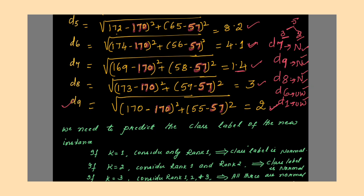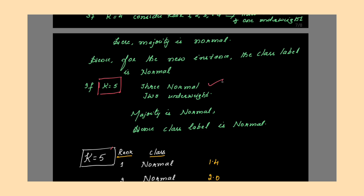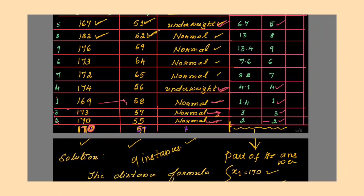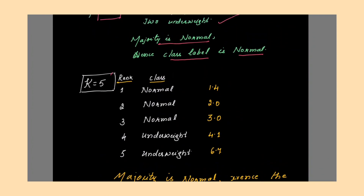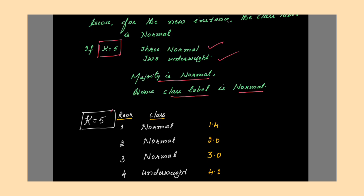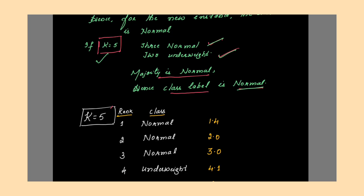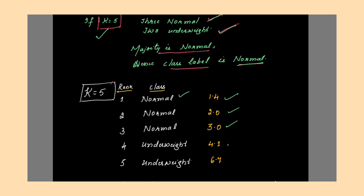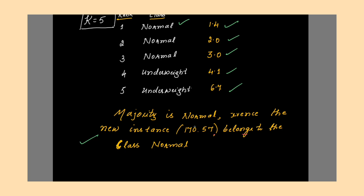The majority class is normal. Hence the algorithm will predict the class label as normal for the new instance. The new instance 170 and 57 is classified as normal — this is your output. While writing the solution, include all steps in detail, show the top-5 neighbors table, and write the conclusion: majority is normal, hence the new instance 170, 57 belongs to class normal.